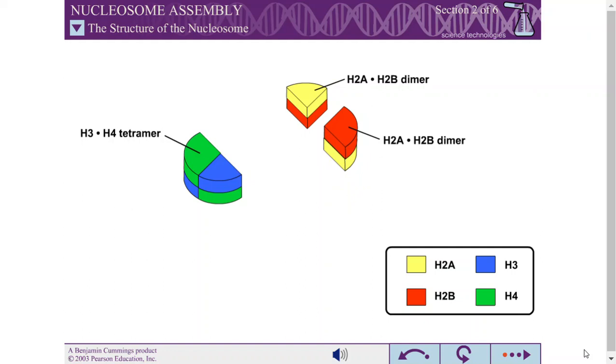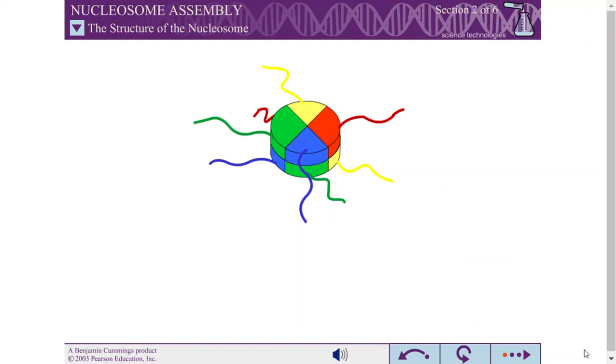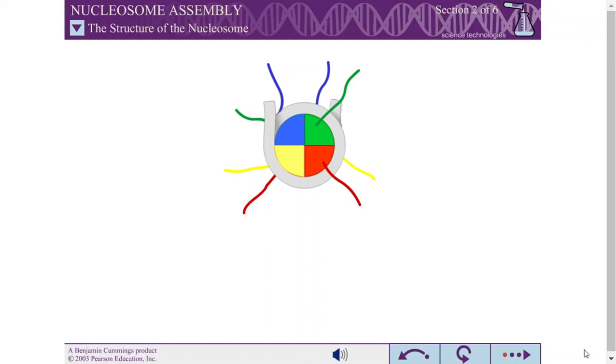Each histone protein has an N-terminal tail. These tails provide a guide for the DNA strand to wrap around the histone core. The N-terminal tails emerge between the DNA strands and create a groove, much like that of a screw, that forces the DNA to wrap in a left-handed manner around the histone.